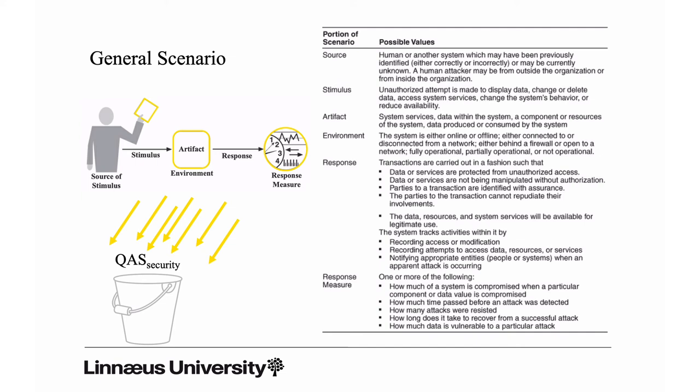And then you can express also how much, or the type of - well, if they are protected it's like yes or no, but there are other types of responses where you can actually measure certain aspects. General scenarios give you some input for deriving concrete quality attribute scenarios. In this case it's a general scenario for security, and of course you use that for quality attribute scenarios for that concern.